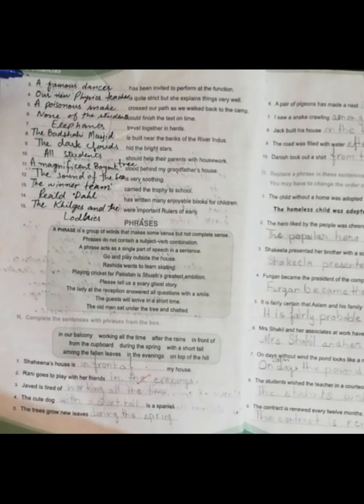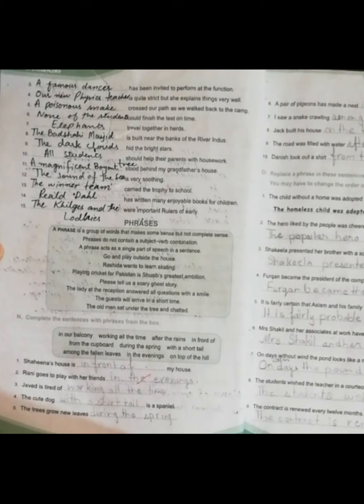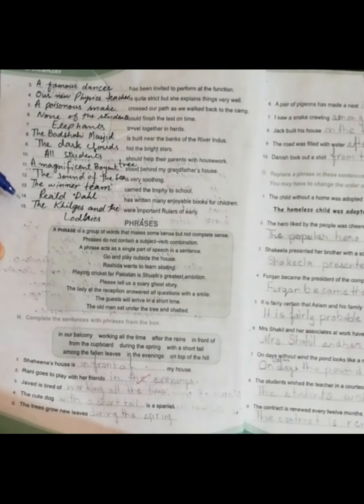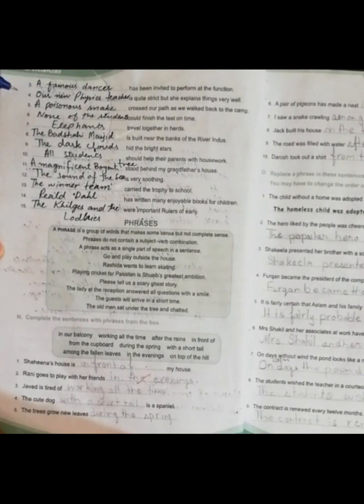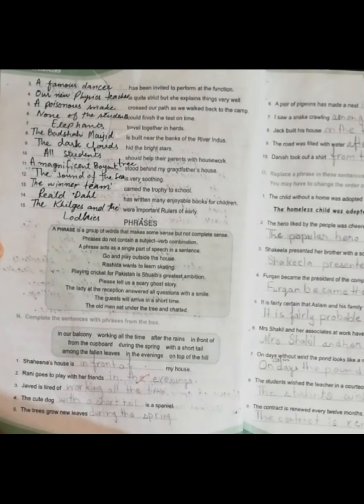The next one is: blank 'has been invited to perform at the function.' So the answer would be 'a famous dancer.' So I have solved all the blanks for you and you can read them on your own and you can learn them on your own. So this was your lecture today. See you in some other class. Till then take care, Allah Hafiz.